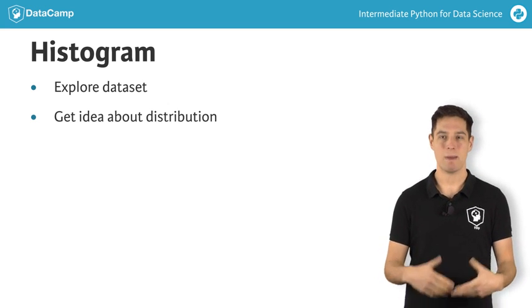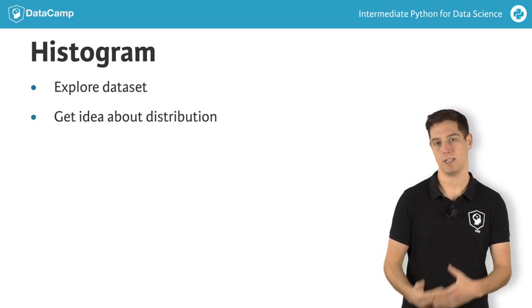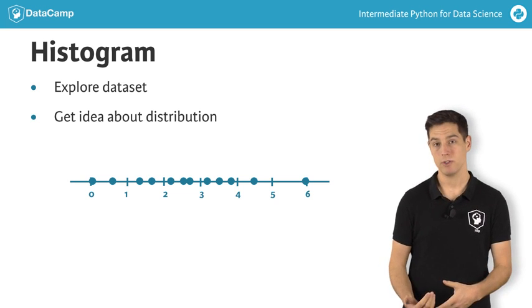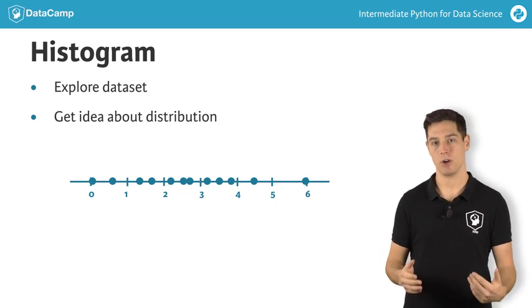To see how it works, imagine 12 values between 0 and 6. I've put them along a number line here. To build a histogram for these values, you can divide the line into equal chunks, called bins.